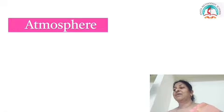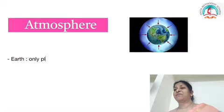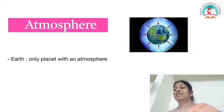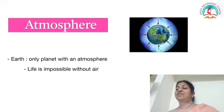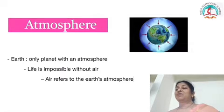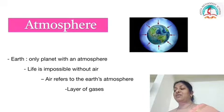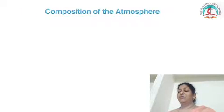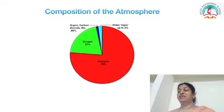Atmosphere. Earth is the only planet in the solar system with an atmosphere that can sustain life. Children, can you imagine life without air on earth? Definitely the answer would be no. Life is impossible without air on the earth. Air refers to the earth's atmosphere. The atmosphere is the layer of gases around the earth. These gases are held close to the earth by gravitational attraction. The atmosphere is a mixture of gases, water vapour and dust particles in different proportions.